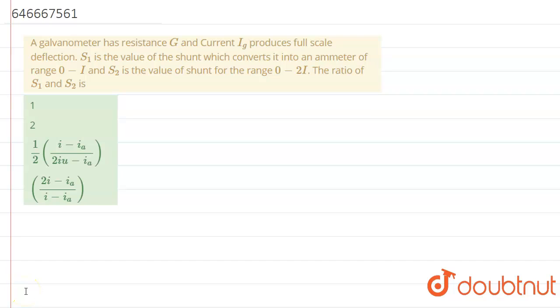We have the question that a galvanometer has resistance of G and a current of IG produces full scale deflection. S1 is the value of the shunt which converts it into an ammeter